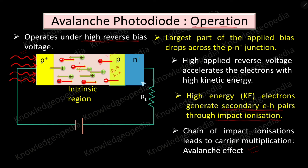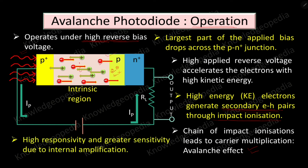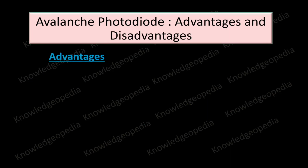Because of carrier movement — electrons moving in one direction and holes in the other — we get a photocurrent. The direction of the photocurrent is opposite to the direction of electron movement. The output can be taken across the load resistance. As the carriers are getting multiplied, the responsivity of the avalanche photodiode is high and it has greater sensitivity due to this internal amplification.